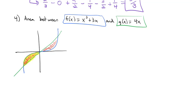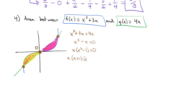Setting the functions equal to each other to find intersection points: x cubed plus 3x equals 4x. Subtracting 4x gives x cubed minus x equals 0. Factoring out x leaves x squared minus 1. Factoring the difference of squares gives x(x plus 1)(x minus 1). So our values are 0 as expected, and negative 1 and positive 1. x is negative 1 on the left and positive 1 on the right.